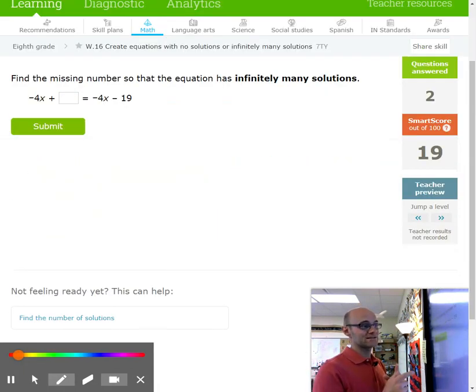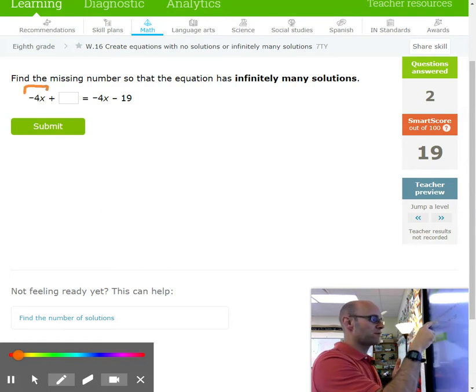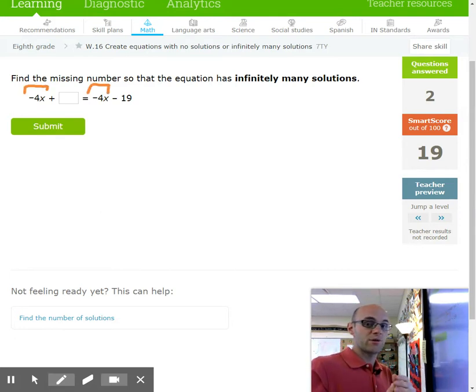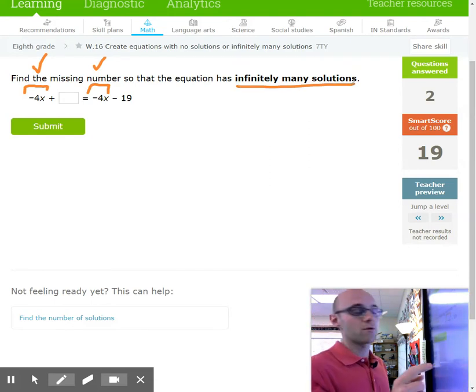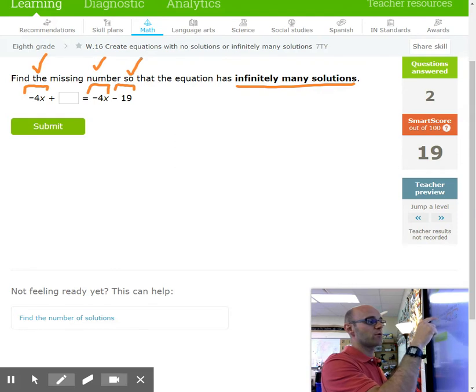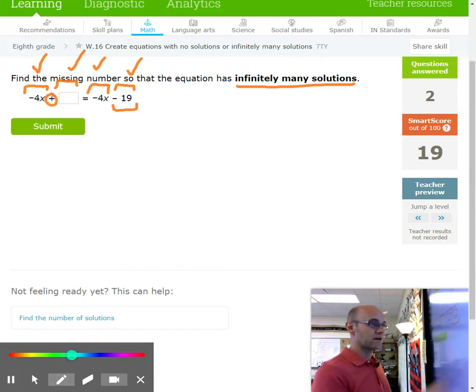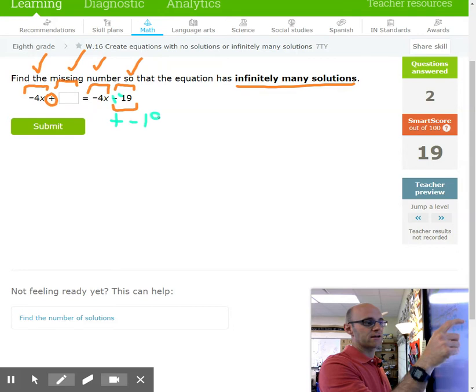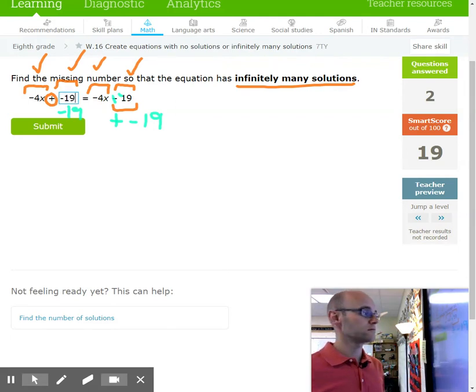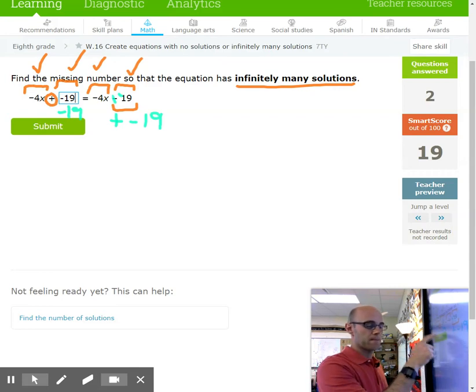In this problem, the box is actually missing where the number usually goes, not the constant, not the variable term. So they already have the same number of X's. So we know this is a special situation where they're either going to be identical equations and there'll be an infinite number of solutions, or they're not identical and then it's no solution. So no matter what I plug in, these two terms are equal, but they say to find an equation that has an infinite number of solutions. So if they have a minus 19, we need a negative 19 so that these look identical and will actually give us an infinite number of solutions.